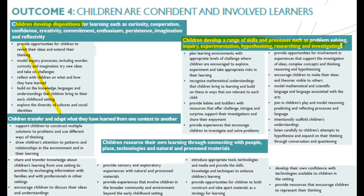All of these different principles are largely scientific. Children develop a range of skills and processes: problem solving, inquiry, experimentation, hypothesizing, research, and investigating — this is the science inquiry process. When children develop a disposition, we give them opportunities to revisit their ideas — that's the explore and explain stage. Then we get to the inquiry skills — that's the elaborate stage — and ultimately we move onto evaluation.